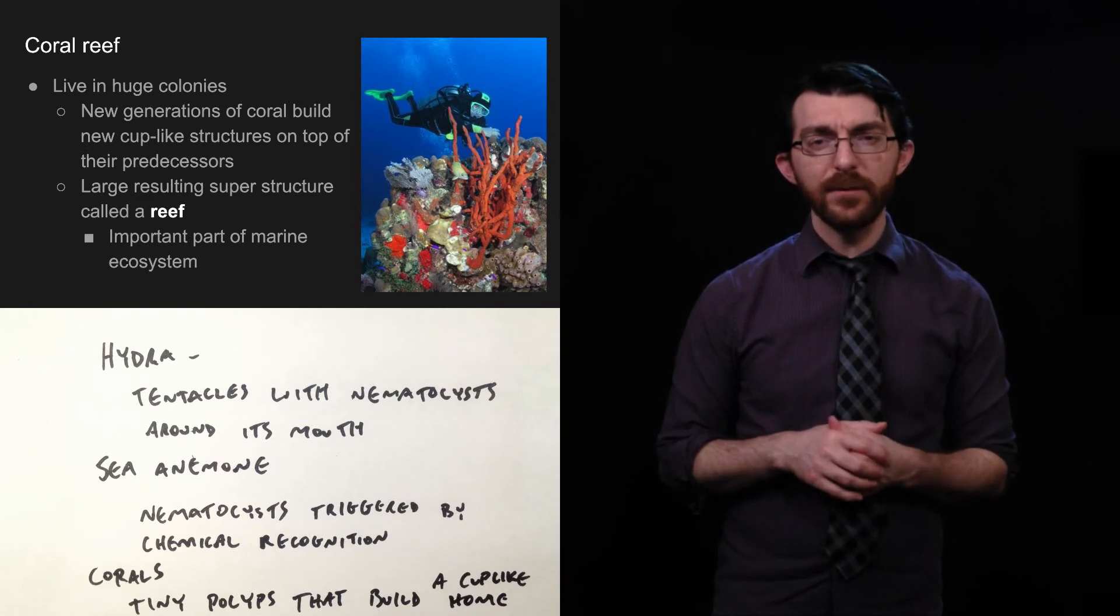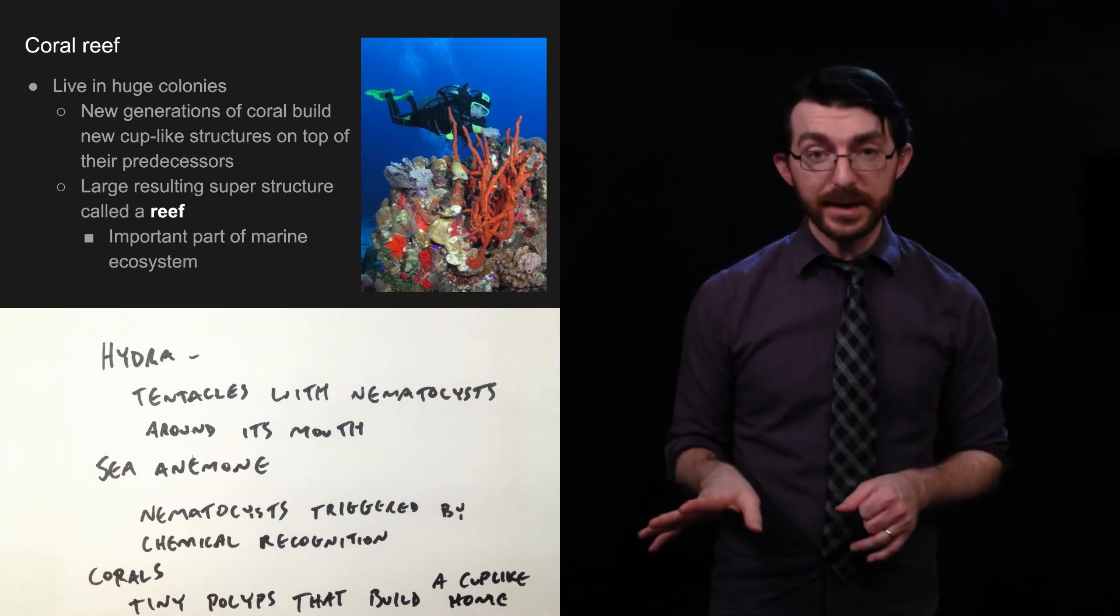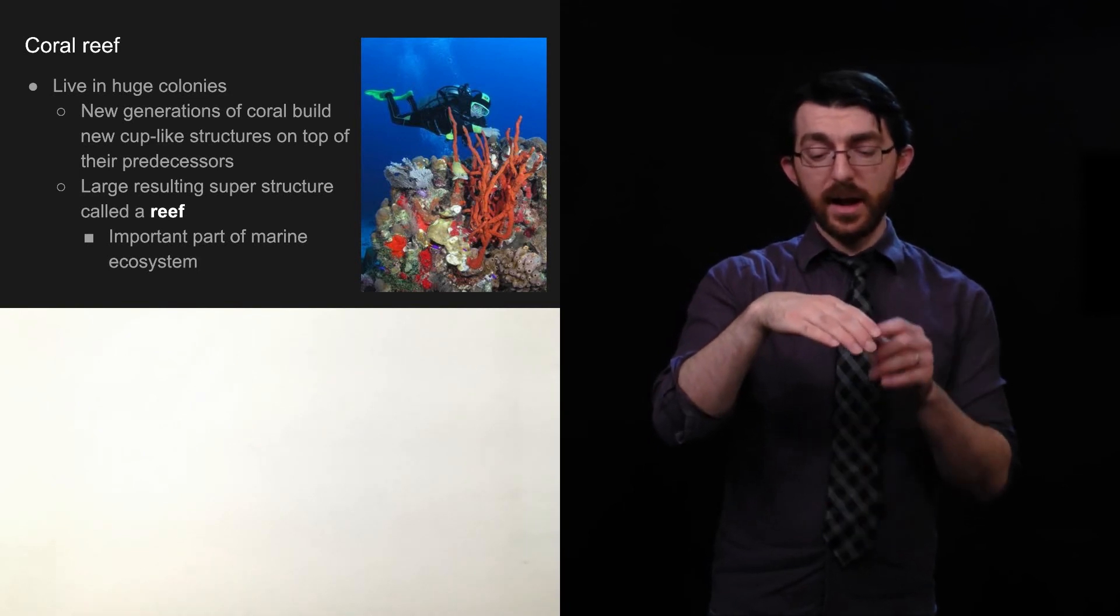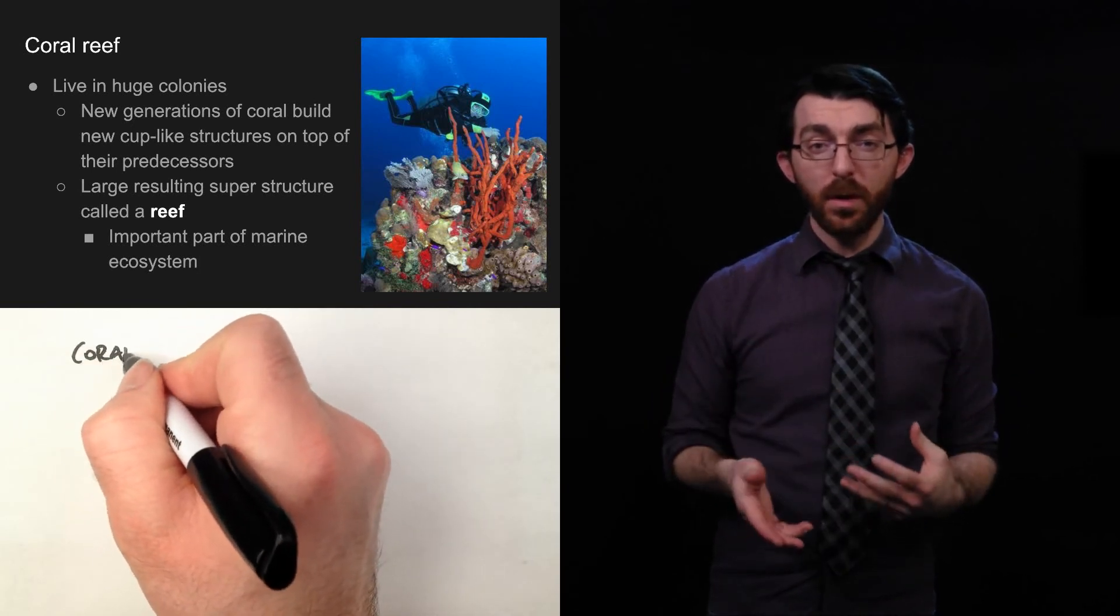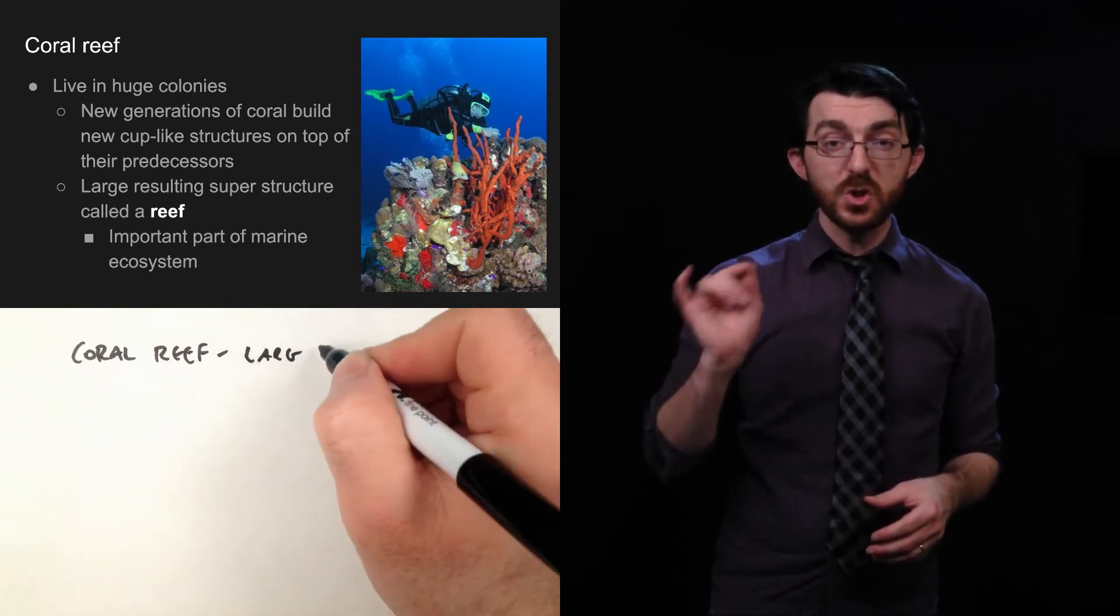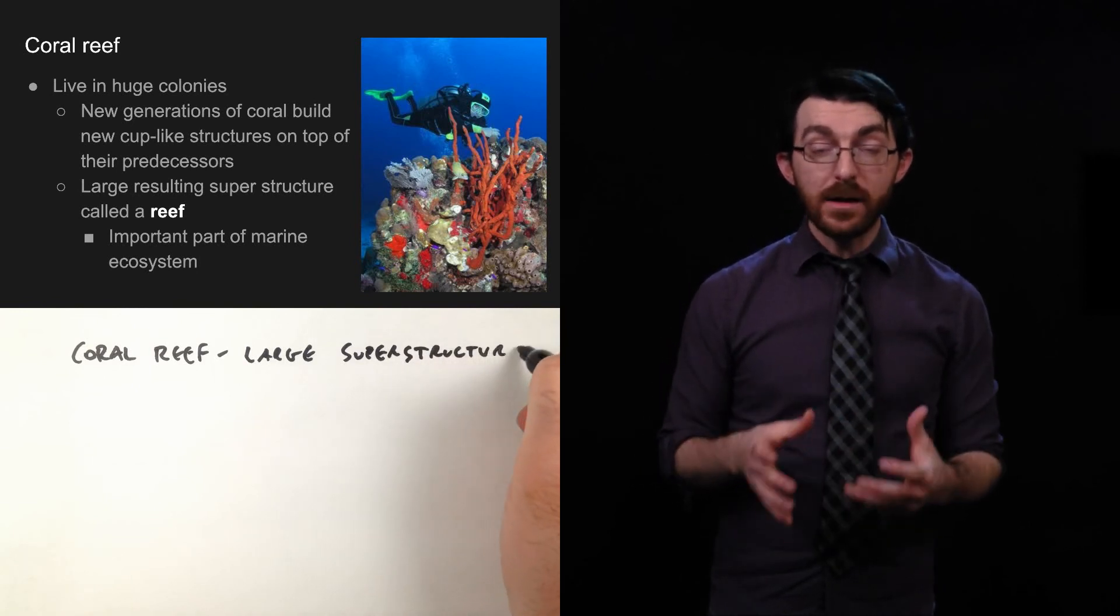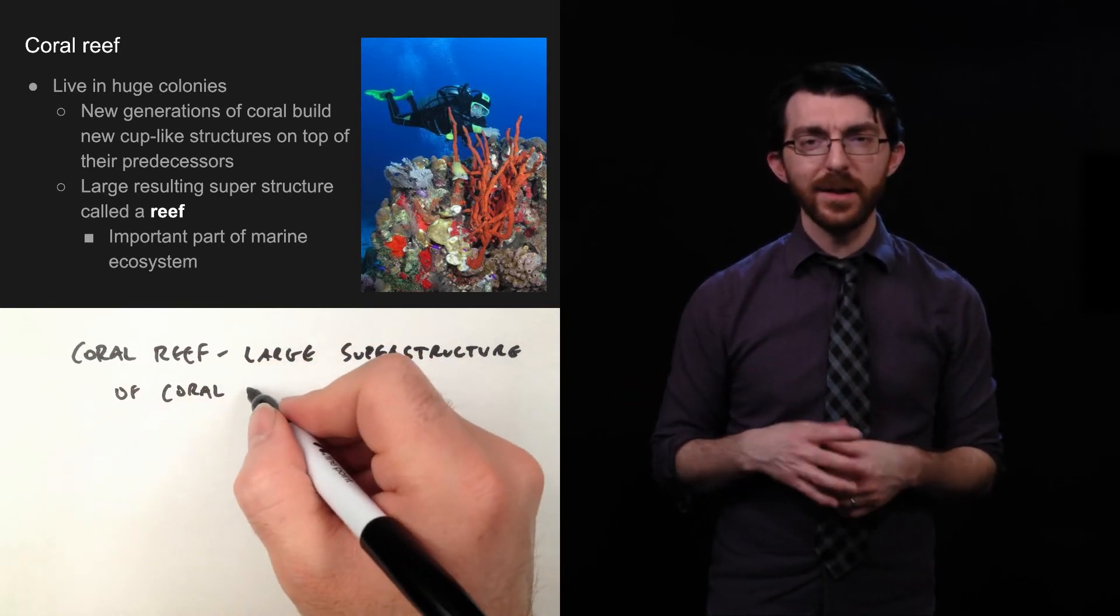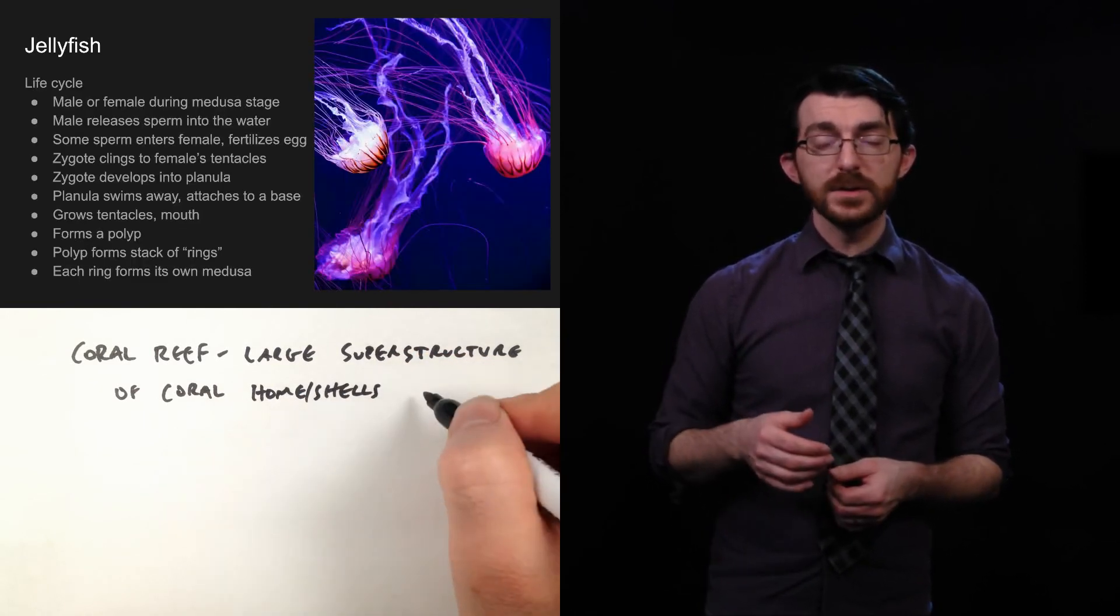So, I mentioned a reef a moment ago. Let's talk about that in a little bit more depth. So, corals live in huge colonies. And the way that it works is, so you got like a layer of corals. When that generation dies, the new ones just kind of build up on top of it. And you have a new layer. So, new generations of coral build new cup-like structures on top of their predecessors. So, this superstructure that results is called a reef. And it's actually an important part of a marine ecosystem. It actually kind of transforms the landscape, so to speak, underwater. And it becomes an important part of the marine ecosystem.